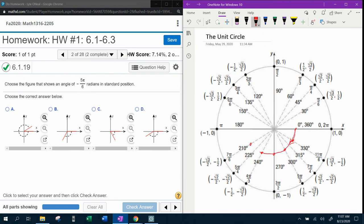So negative 5 pi over 6 would start here at 0 and spin clockwise this far. That would be negative 5 pi over 6.